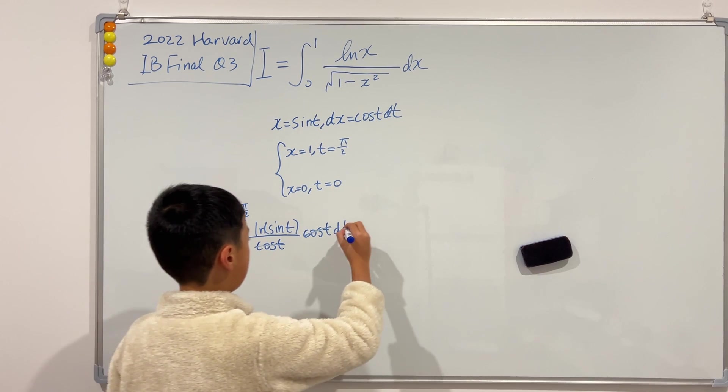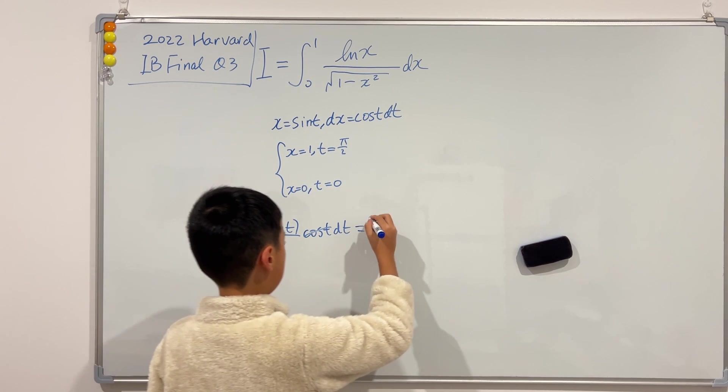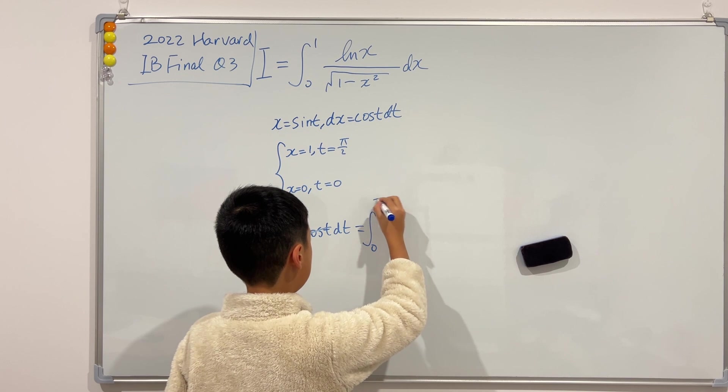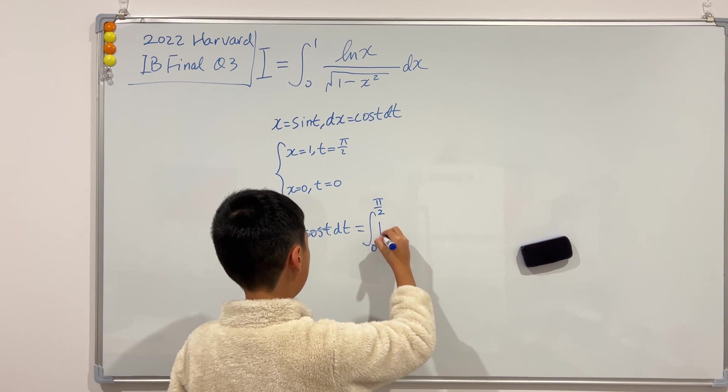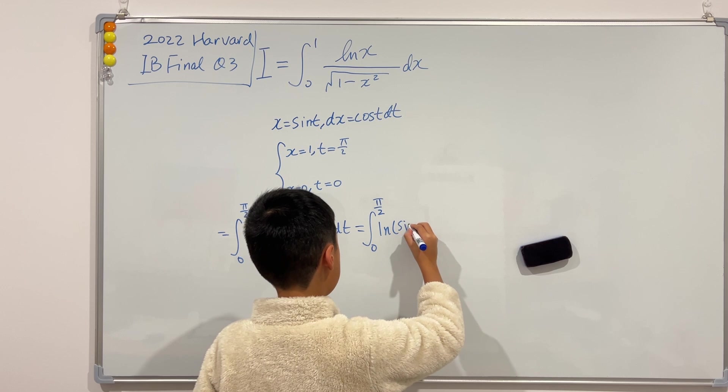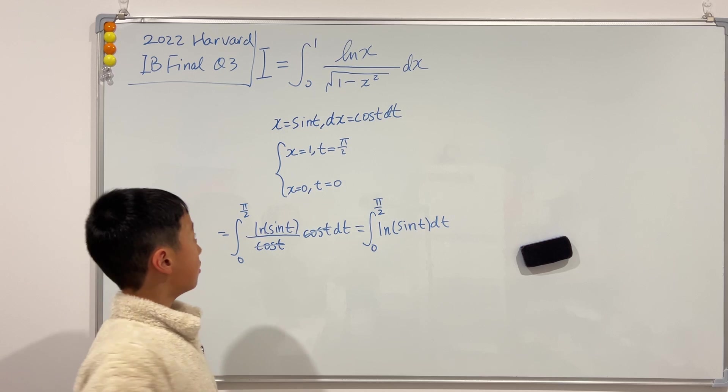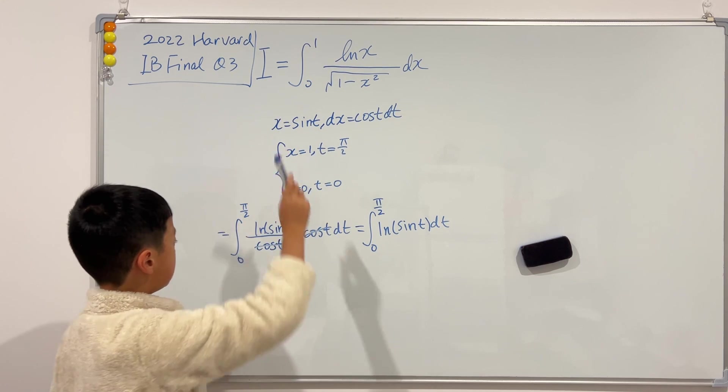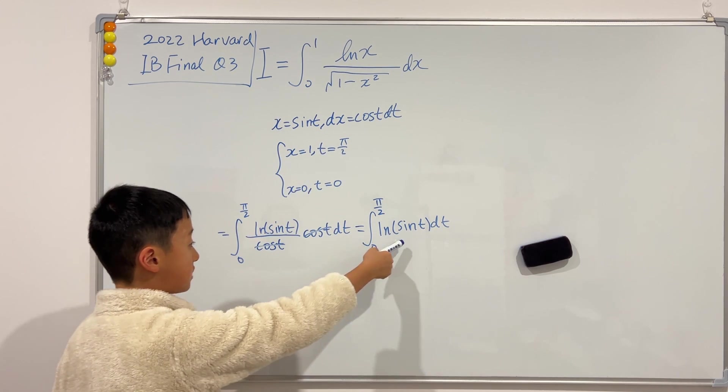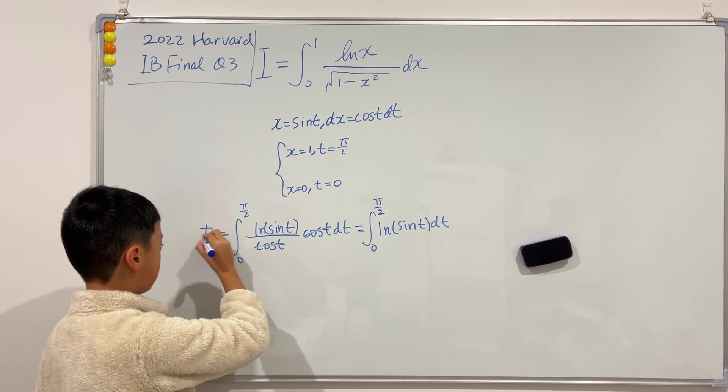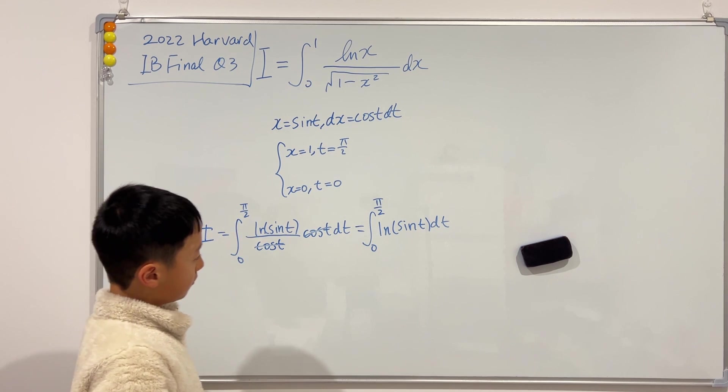Nice. So then we know that this is equal to the integral from 0 to π over 2 of ln of sine t dt. And look, we have set i to be this, so then we know that i is also equal to this. But now, what do we do?